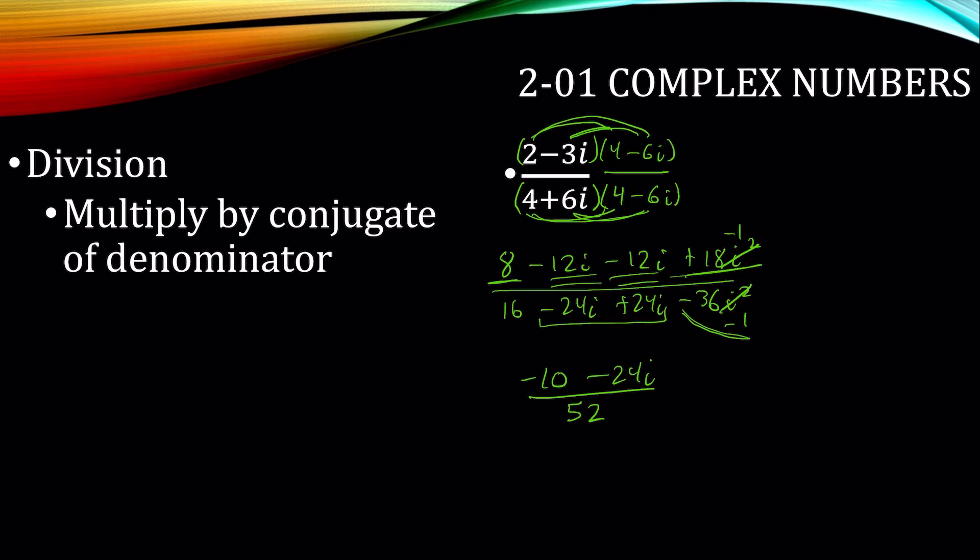Well, the format is a plus bi, so let's split this into two separate fractions. You can do that when there's a single denominator. And then reduce it. So negative 10 and 52 reduced by 2 would be negative 5 over 26. And 24 over 52 reduced by 4, making it 6 over 13i.